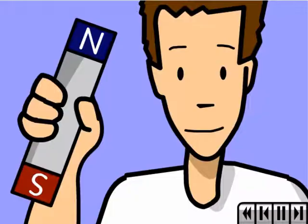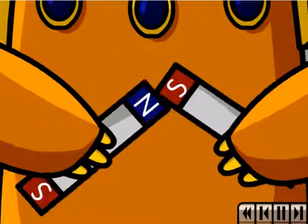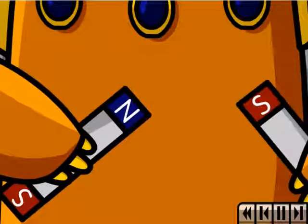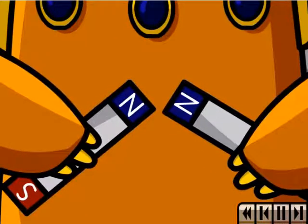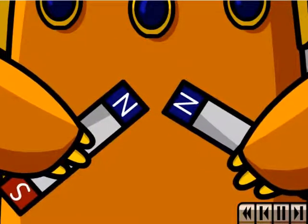Every magnet has a north and a south pole. And it's true that opposites attract. A north pole will attract a south pole. But try to get one north pole together with another north pole and they're just not interested. You can force them together, but they will repel each other.